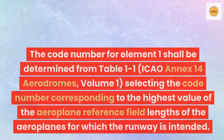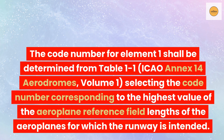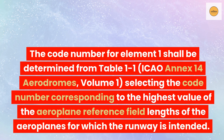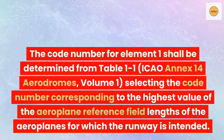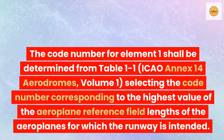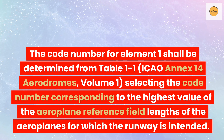The code number for element 1 shall be determined from Table 1-1, ICAO Annex 14 Aerodromes, Volume 1, selecting the code number corresponding to the highest value of the aeroplane reference field lengths of the aeroplanes for which the runway is intended.